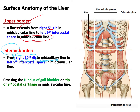At the mid-clavicular line, the inferior border crosses the costal cartilage of rib number nine. At this crossing point, you will find the fundus of the gallbladder. To locate the gallbladder fundus, simply draw the mid-clavicular line down to where it meets the costal cartilage of rib nine — that intersection marks the fundus of the gallbladder. Thank you for watching, and I hope you find value in it.